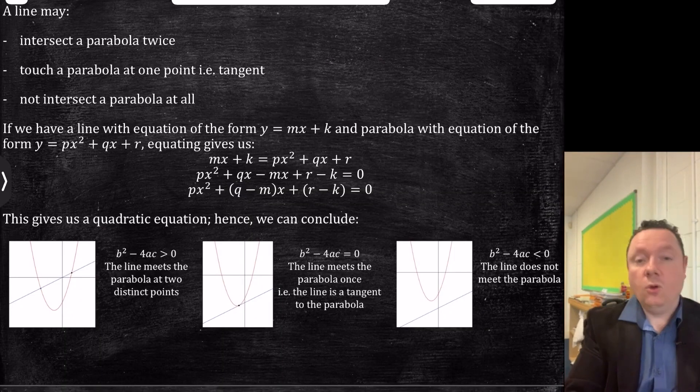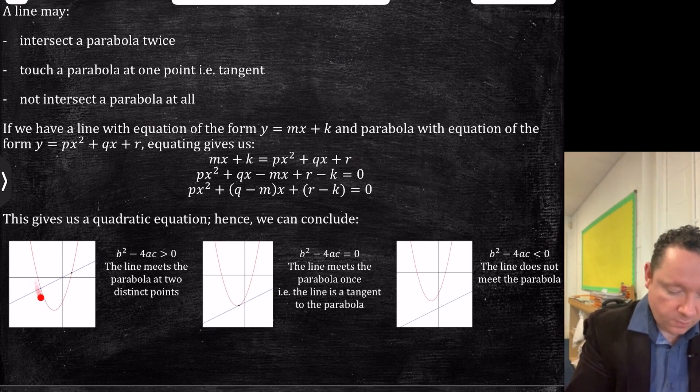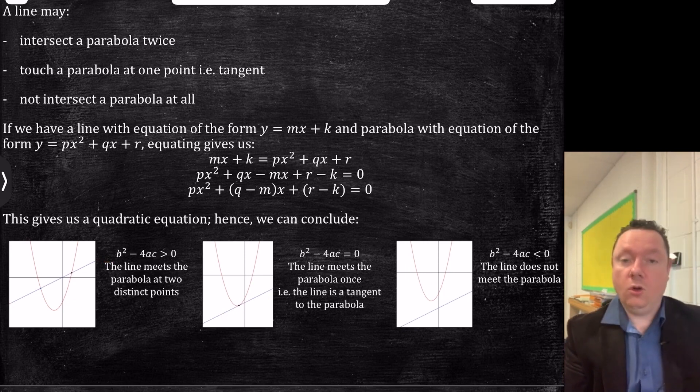Intersection of lines and parabolas. There's two things together. Imagine we've got a parabola. Here's some pictures here of parabolas. A line could intersect either twice, or at one point, or not at all.